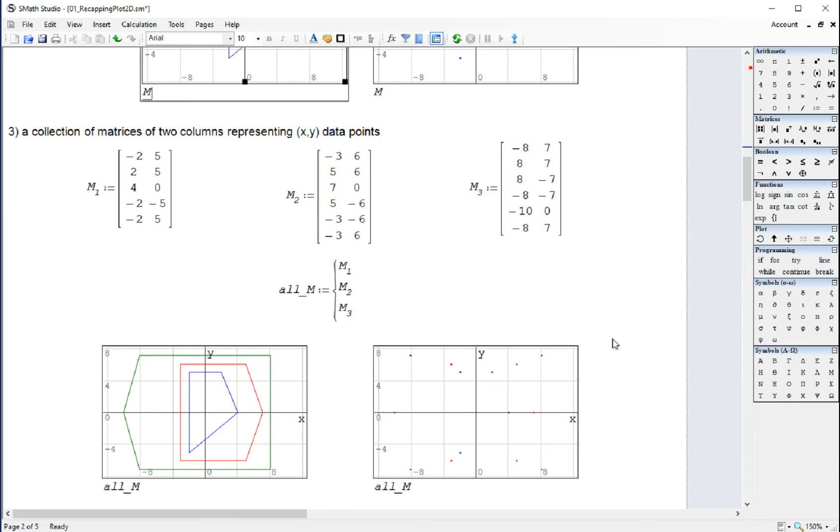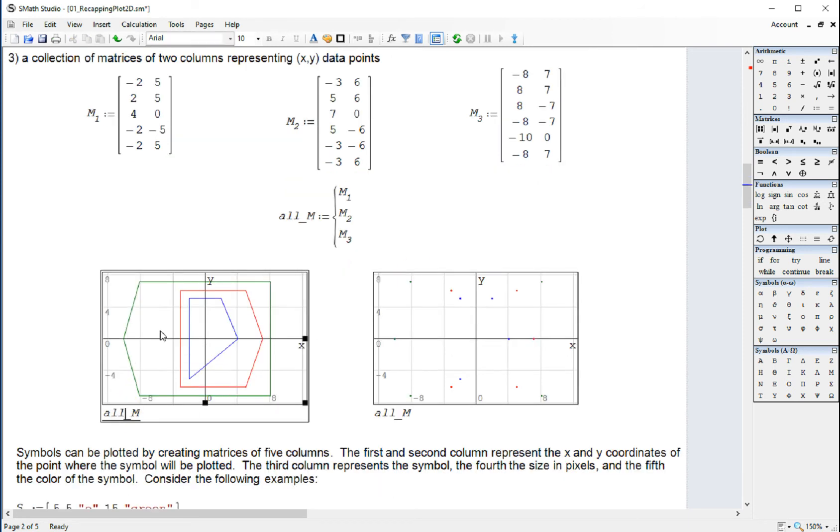In the next example, I have three different matrices, and I create a system called All M. And when I plot it in here, you get the three different polygons that have been set by creating these matrices.